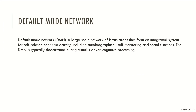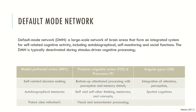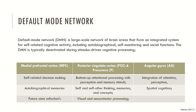The default mode network is a large-scale network of brain areas that form an integrated system of self-related cognition, including autobiographical self-monitoring and social functions. The default mode network is typically deactivated during stimulus-driven cognitive processing, meaning that when we are focused on a cognitive task, the default mode network deactivates itself. However, when we are thinking about ourselves in the context of our relationships, this brain network is highly active. This network is connected to the medial prefrontal cortex, which is responsible for self-regulating decision-making, autobiographical memories, and future-aimed reflection.